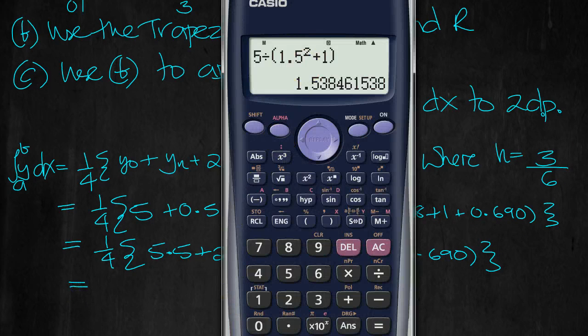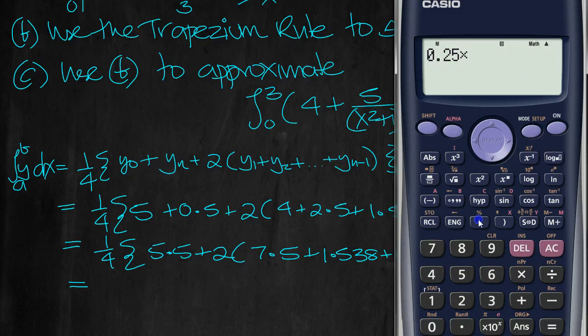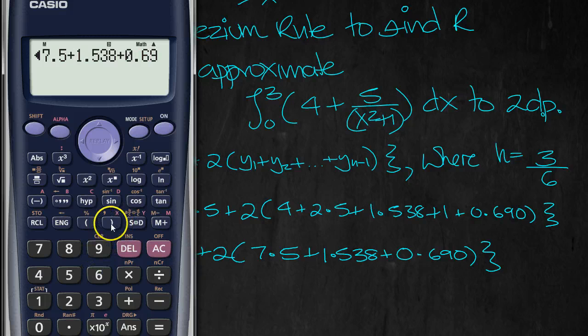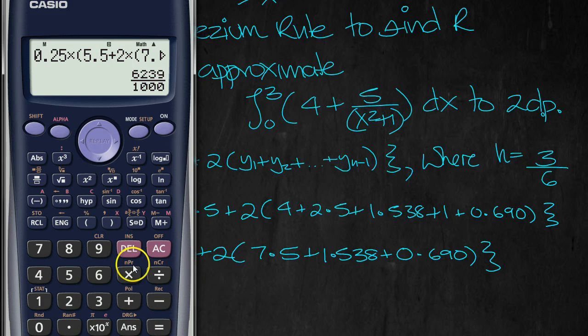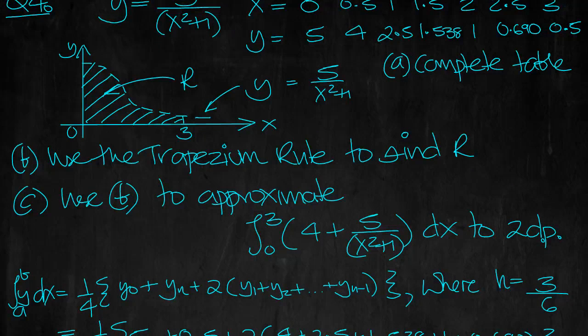So let's do it then. I'll move the calculator over here to start with. So it's 0.25 times bracket 5.5 plus 2 times bracket 7.5 plus 1.538 plus 0.690, close that bracket, close the brace, equals 6.239. And then we needed to find R.